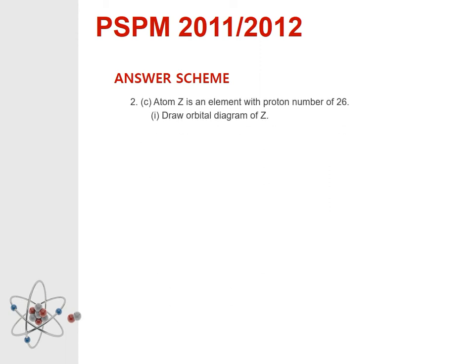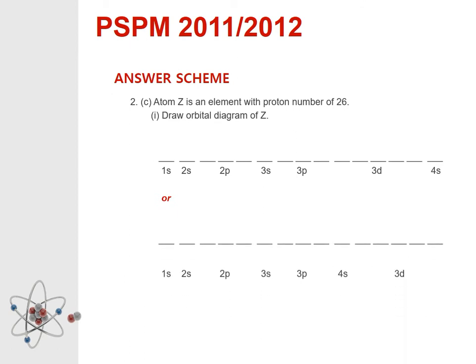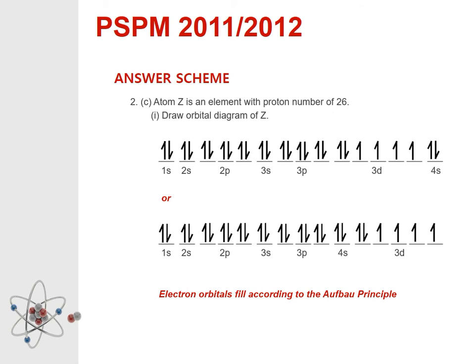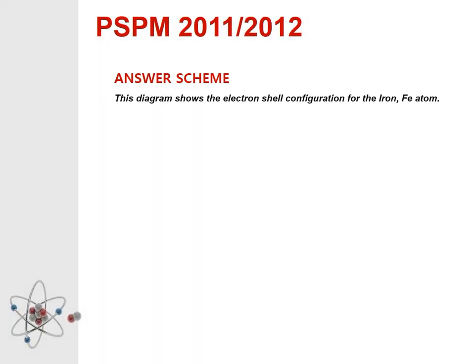Question 2c number 1: Atom Z is an element with proton number 26. Draw the orbital diagram of Z. Electron orbitals fill according to the Aufbau principle. This diagram shows the electron shell configuration for the iron atom, which has 26 electrons.